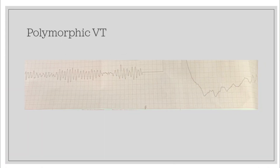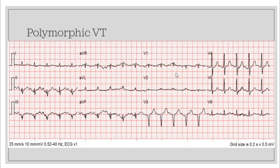Here we're going to talk a little bit about polymorphic V-tach. This is approximately a 50-year-old female in cardiac arrest. The crew defibrillated this rhythm and got this 12-lead on the patient. If you actually look at this, the QTc ends up being around 460 to 470 — it's not over 500. So this is your example of a polymorphic V-tach and not torsades.